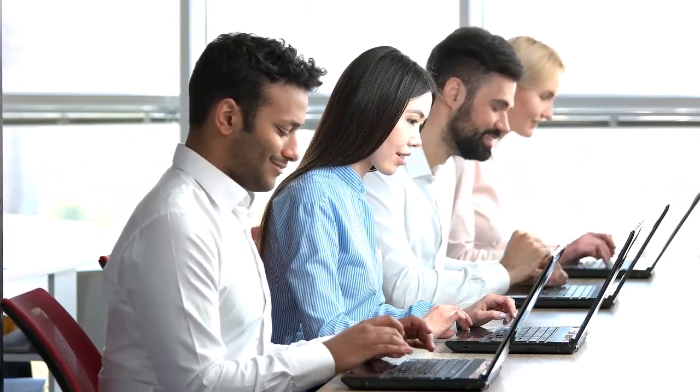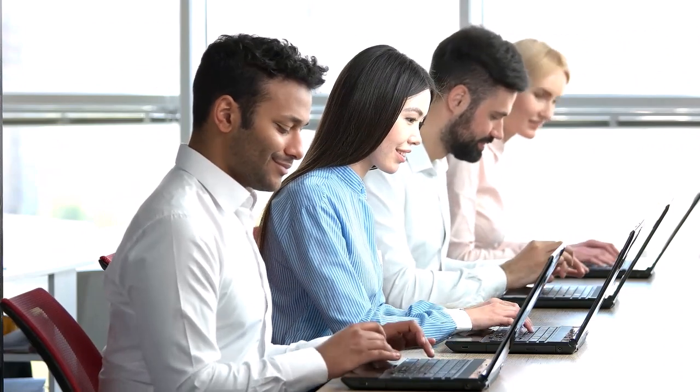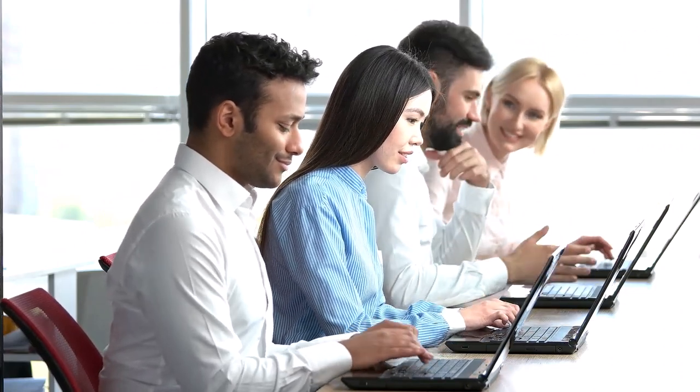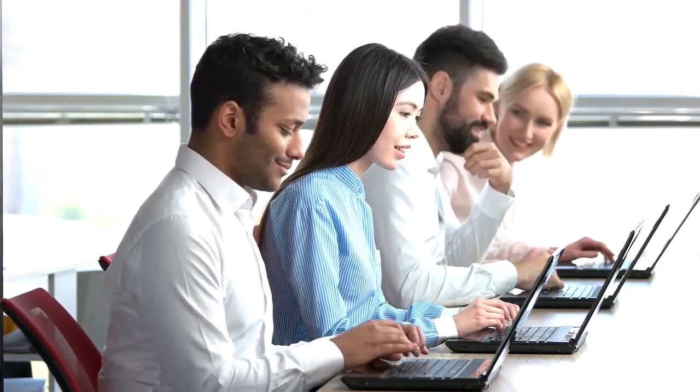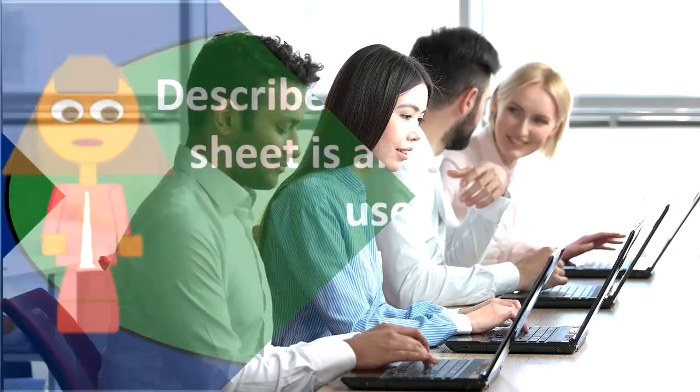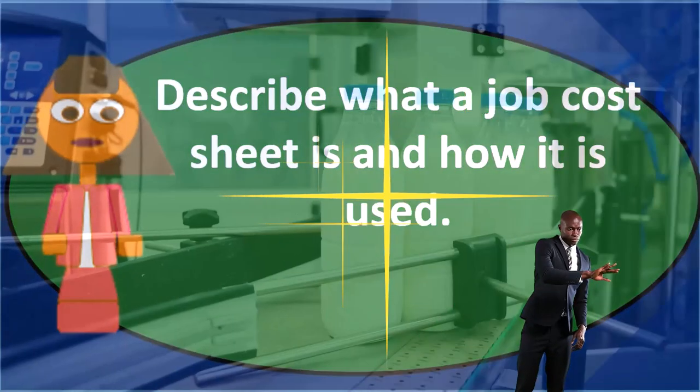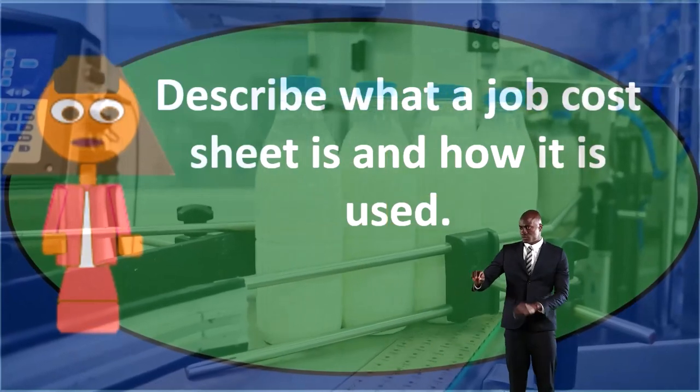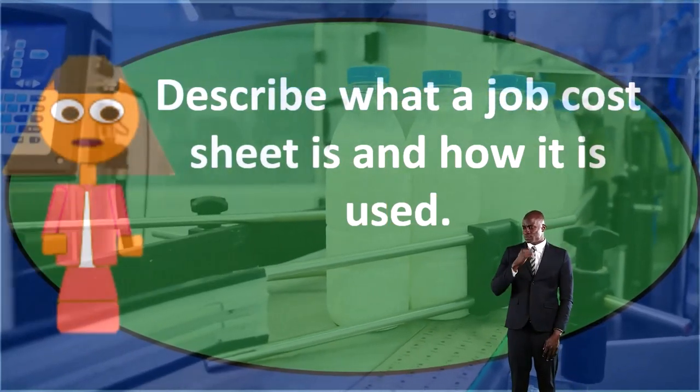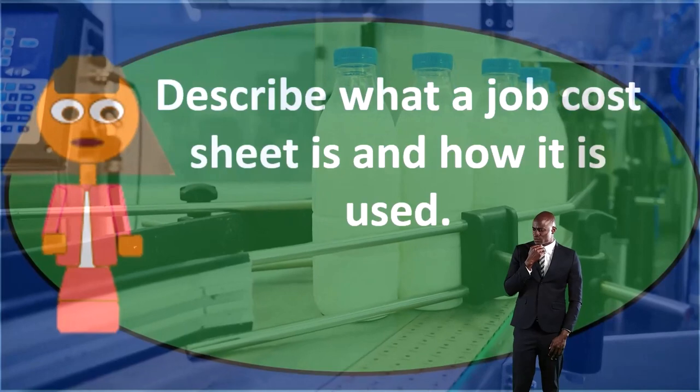That's how we're going to track the jobs typically, and we're going to have any customer information on the job cost sheet. And then it will break up the costs of the job. Those costs will typically include direct materials, direct labor, and overhead per job. We'll sum those up to give us the total cost for the job.